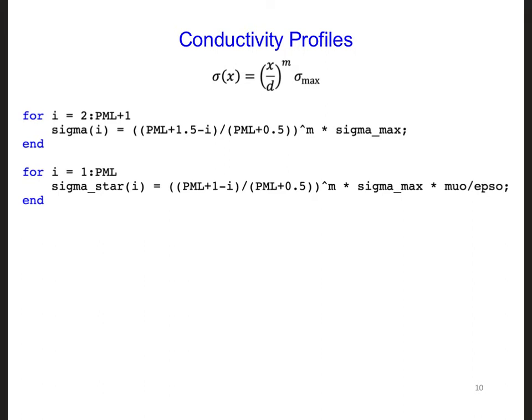The conductivities in our two-dimensional PML have analogous profiles as for the one-dimensional code. Now we're just going to be calling them, instead of sigma, sigma, let's call this sigma E PML. And we're going to call this one sigma H PML.